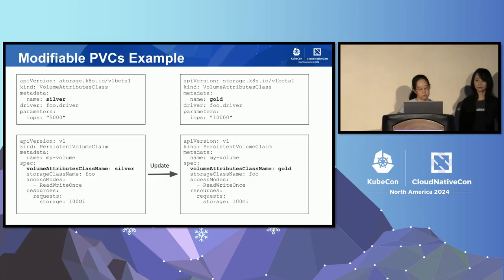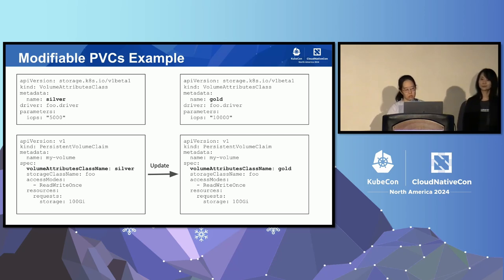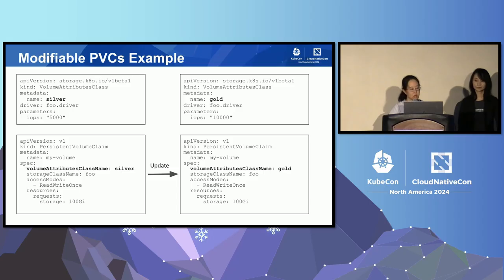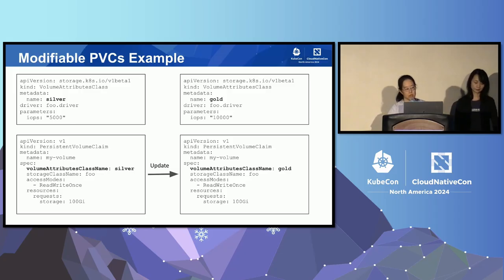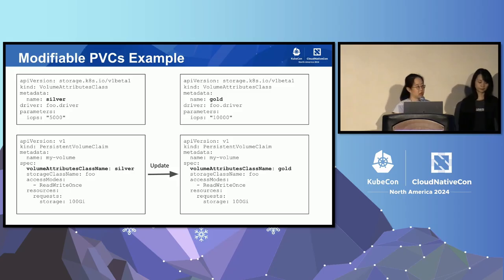For example, here we have two volume attributes classes: silver, which sets IOPS to 5,000, and gold, which sets it to 10,000. The PVC is initially provisioned with silver, but after some time you realize you need more performance. So you modify your existing PVC object and change the volume attributes class to gold, which signals the CSI driver to change the underlying storage volume to allocate 10k IOPS. This feature has to be supported by the CSI driver you're using, so please check your CSI driver's documentation for details.